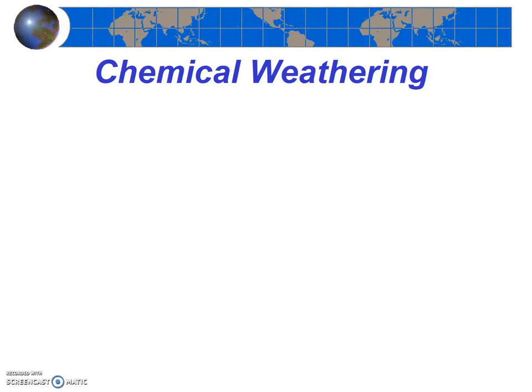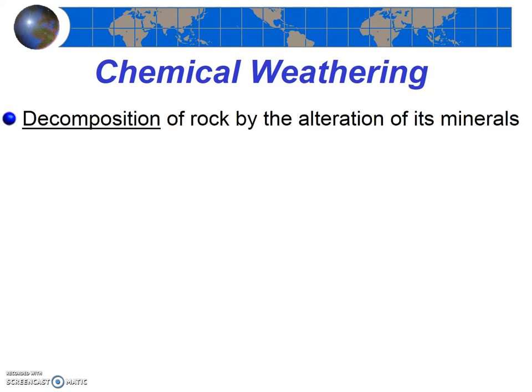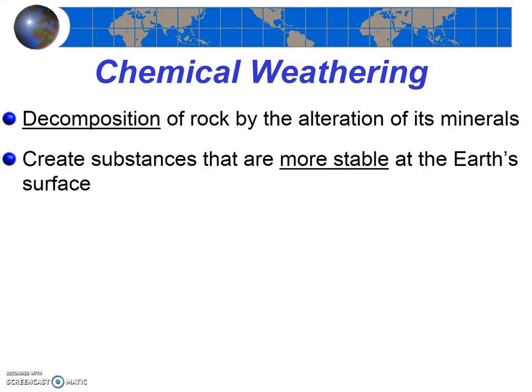From the previous videos, we know that there are two types of weathering: mechanical and chemical. We defined them both and thoroughly discussed mechanical weathering. Now we will turn our attention to chemical weathering. Chemical weathering decomposes the rock and thus alters the rock's mineral composition. The resulting weathered materials are generally more stable at the earth's surface than the original materials.